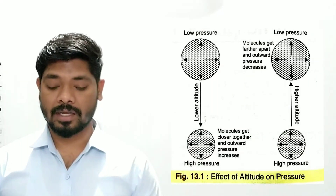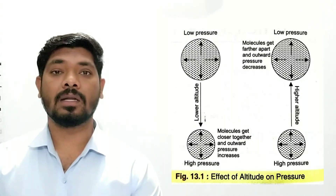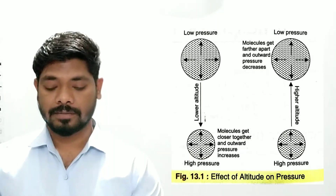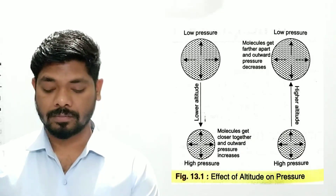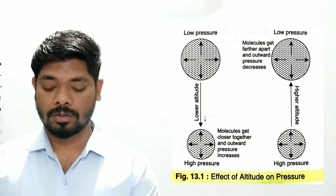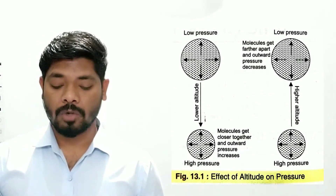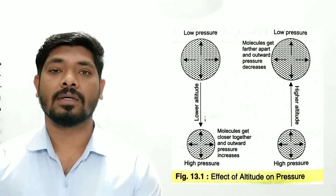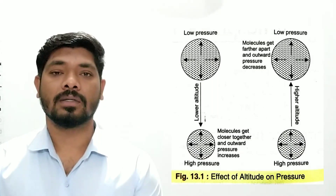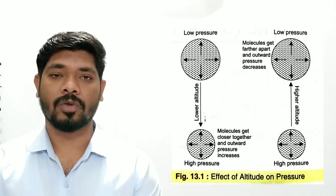There is a diagram over there which is well explained. You could see the first diagram showing high pressure and low pressure. The lower part of the diagram is a bit smaller. The molecules get closer together and outward pressure increases. At the surface of the earth, the molecules are close together and compact, and that is why pressure is high on the surface of the earth.